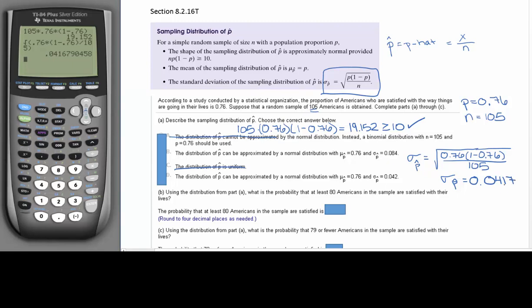And it says to round to three decimal places, so we're going to pick D as our answer.